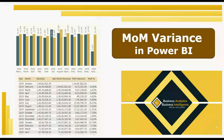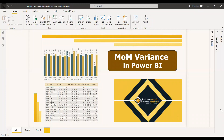Welcome to this new video. This video is about month over month variance and its percentage in Power BI. Month over month variance is supposed to compare the current revenue with the previous month's revenue, or current sales with the previous month's sales, and the percentage of difference between them.